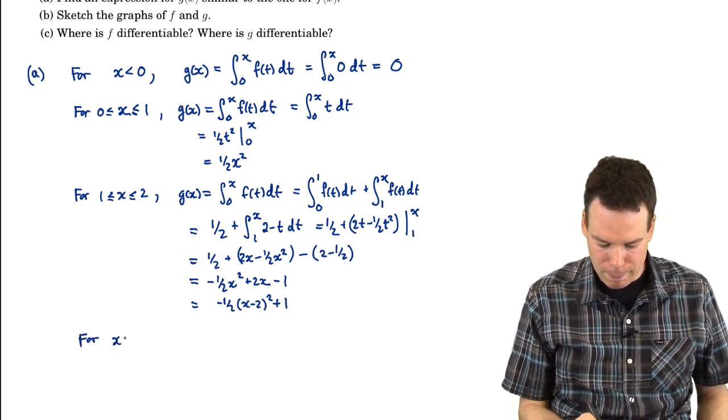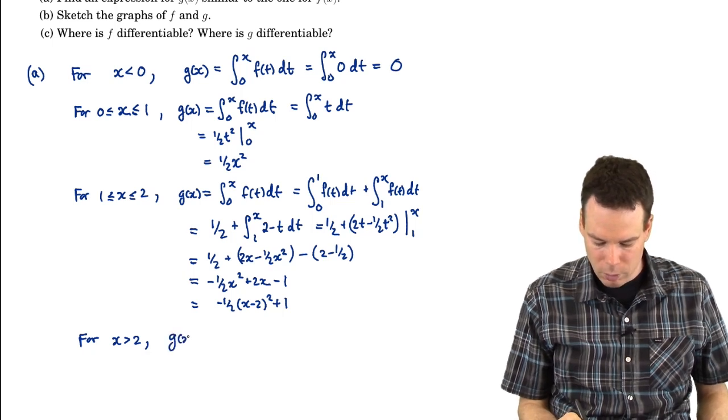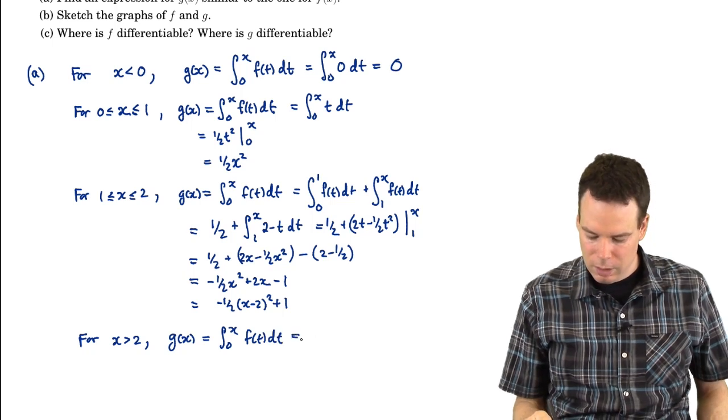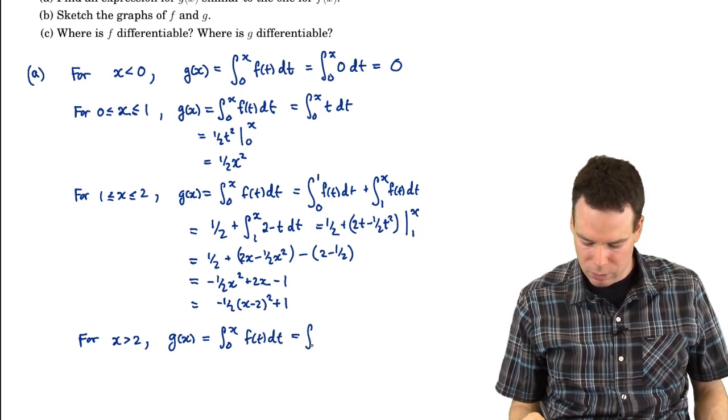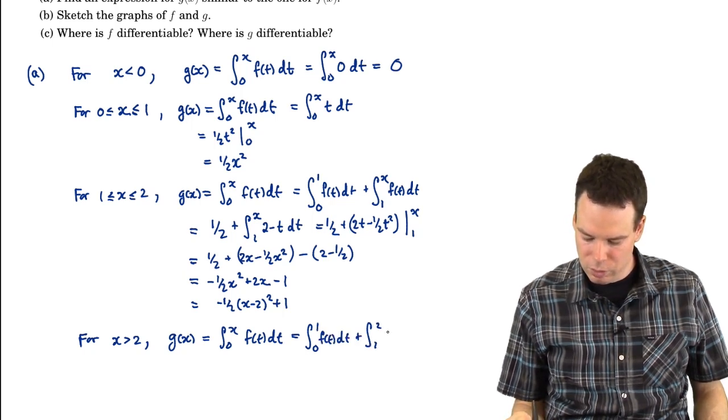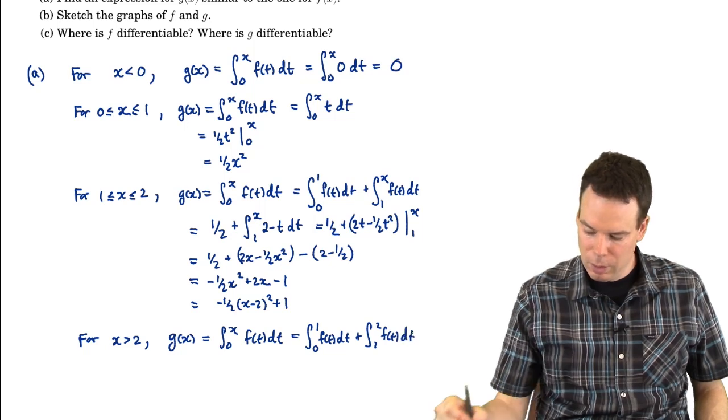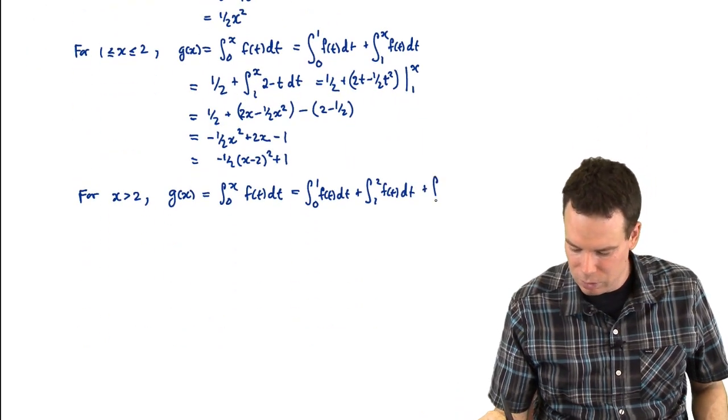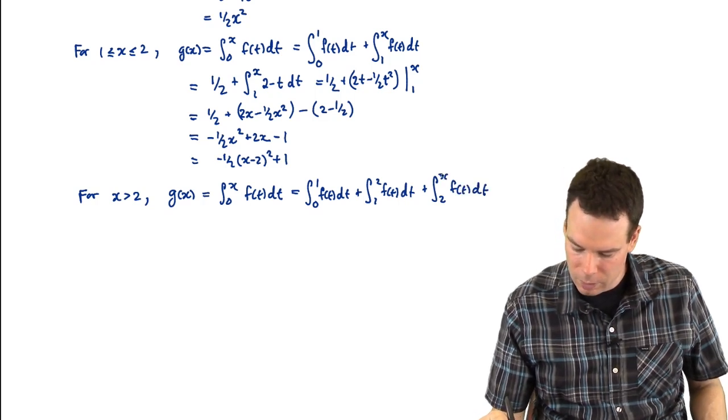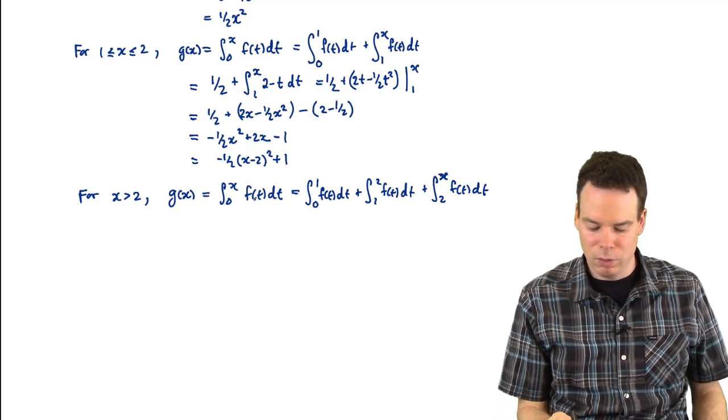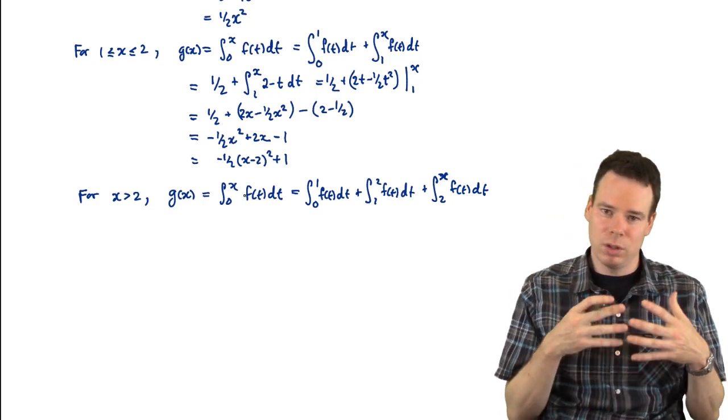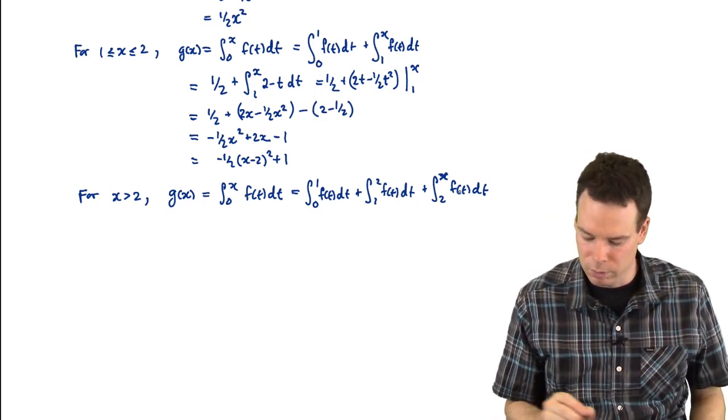What about the last one for x bigger than 2? Well, g of x is equal to the integral from 0 to x of f of t dt. Here, my integral has to go from 0 to 1 of f of t dt, plus the integral from 1 to 2 of f of t dt, plus the integral from 2 to x of f of t dt. I have to split this integral up, because for x bigger than 2, the f description changes. It's defined to be x on one portion, 2 minus x on another one, and then 0 on the rest.